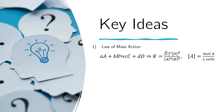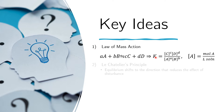The bracket notation means the molarity of the solution. If we're looking for the molarity of A, that's just the number of moles of A over the total number of liters of the entire solution. This is how we compute the equilibrium constant.